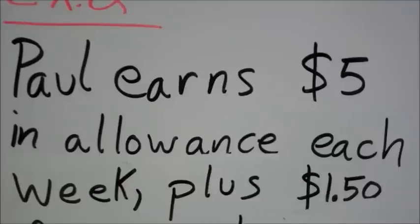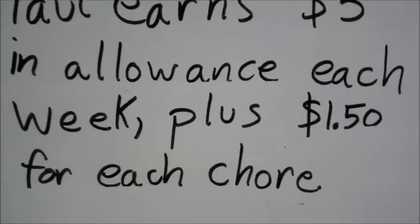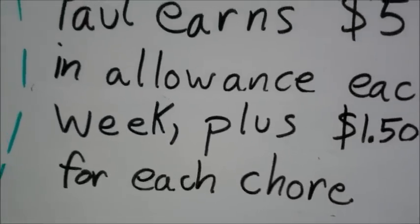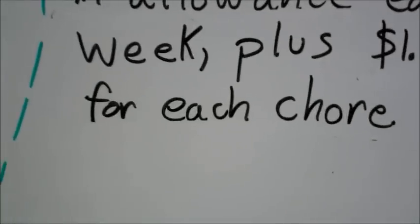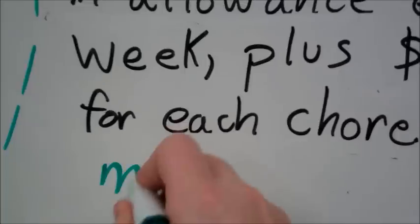In example two, it says Paul earns $5 in allowance each week plus $1.50 for each chore. So we want to write an equation where we can find how much money Paul earns in one week. So the amount of money I'm going to say is m.